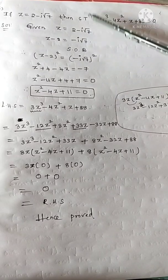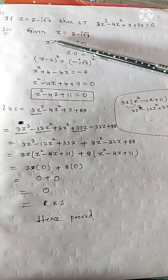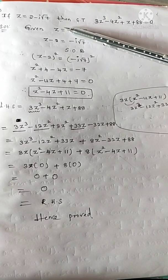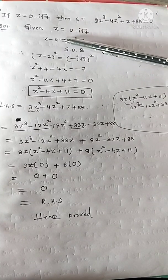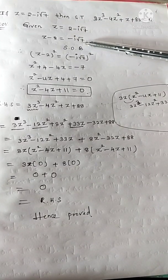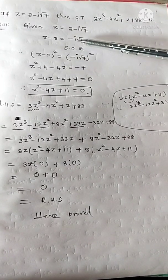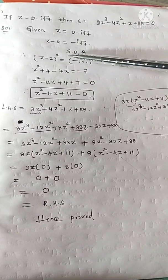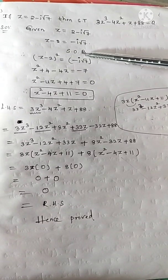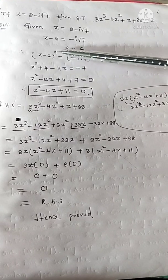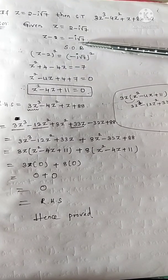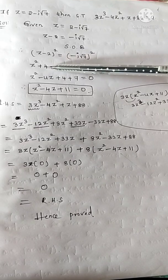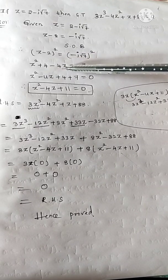Method 2: z equal to 2 minus i root 7. Move 2 to the left side: z minus 2 is equal to minus i root 7. The right side is the imaginary part of the complex number. Now, squaring on both sides: z minus 2 whole square equal to minus i root 7 whole square. Expand using the a minus b whole square formula: a square plus b square minus 2ab.